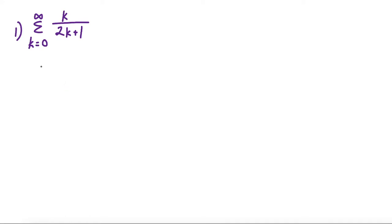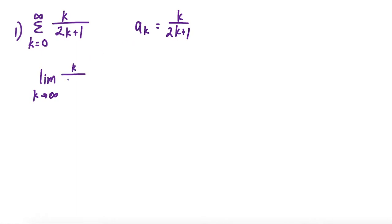For this first question, to apply the divergence test, we take the limit as k goes to infinity of the term a sub k. So if a sub k equals k over 2k plus 1, we take the limit of a sub k, which is k over 2k plus 1. This is a rational function, and the leading terms have matching coefficients in the numerator and denominator, so the limit as k goes to infinity is simply the ratio of their coefficients. The limit here is equal to one half, which is non-zero.